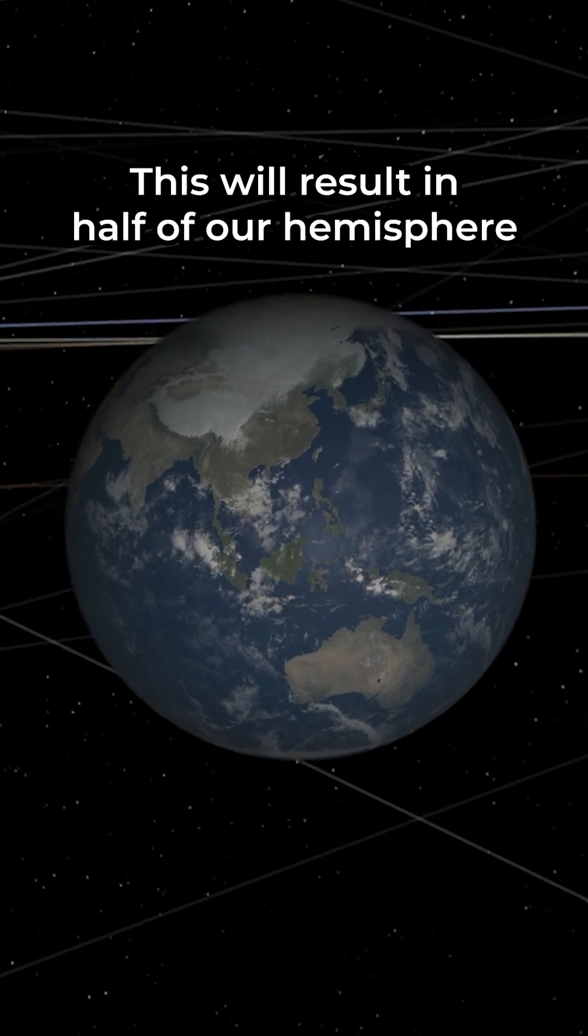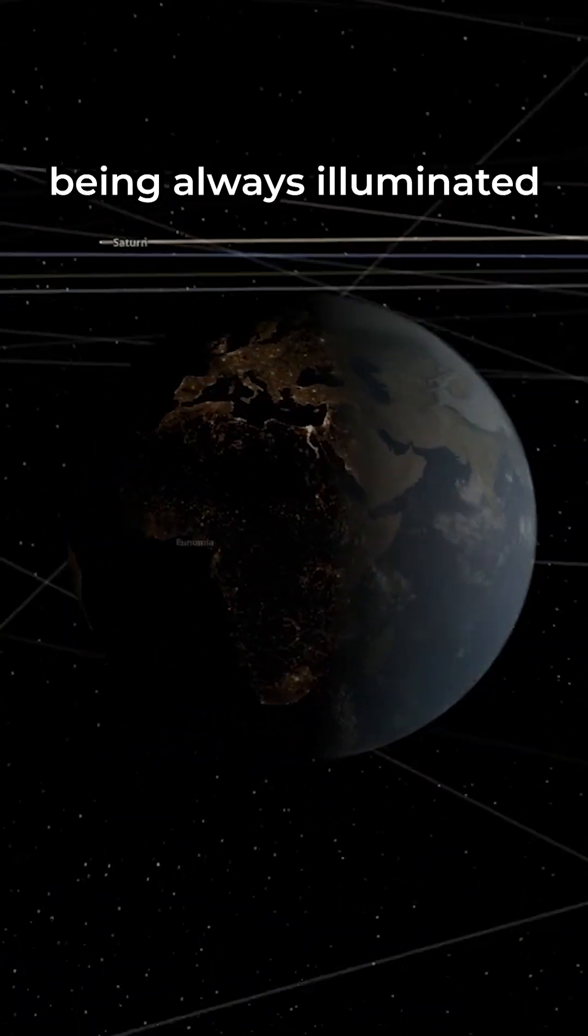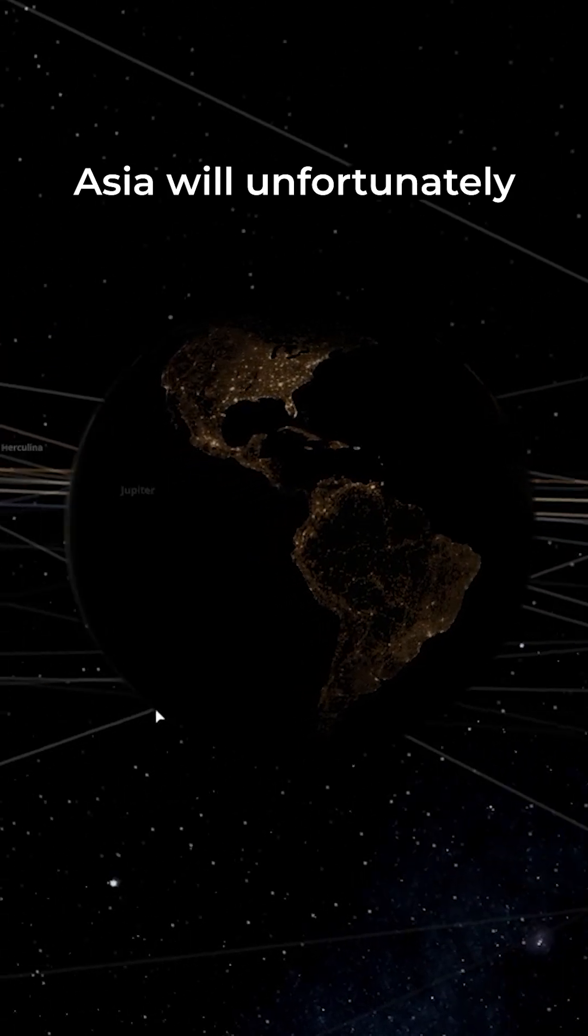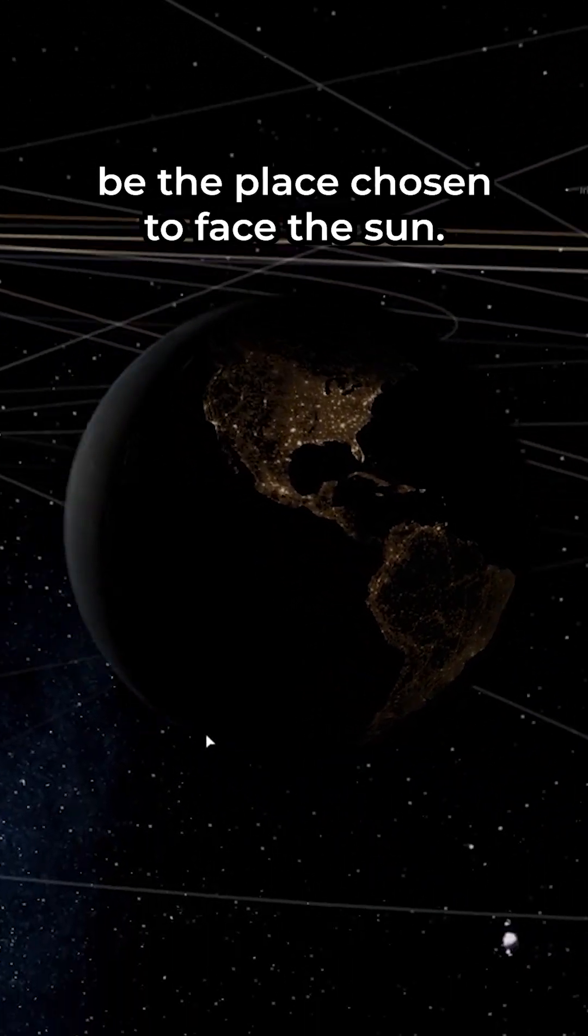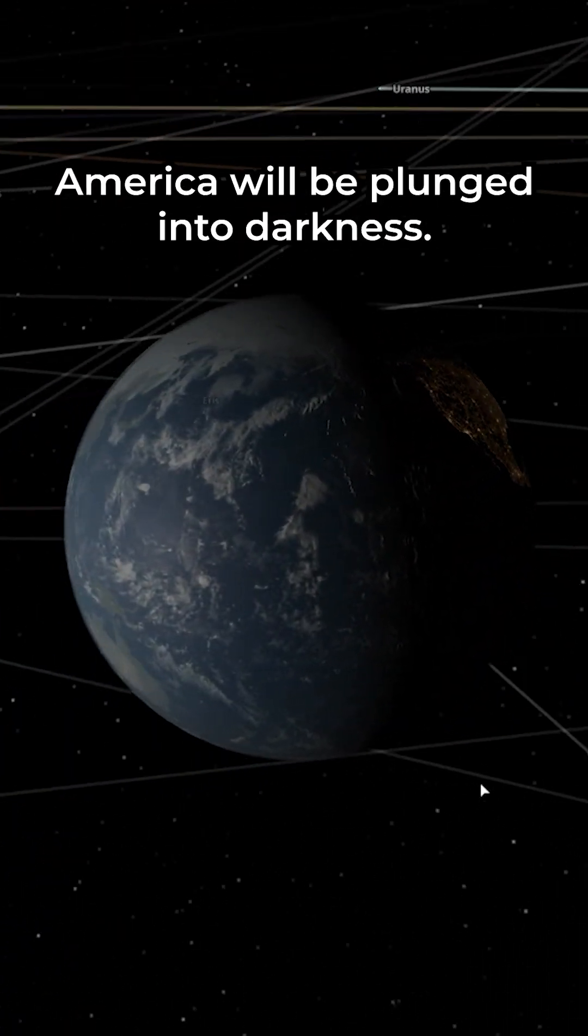This will result in half of our hemisphere being always illuminated. In this case, Asia will unfortunately be the place chosen to face the sun, and this means that America will be plunged into darkness.